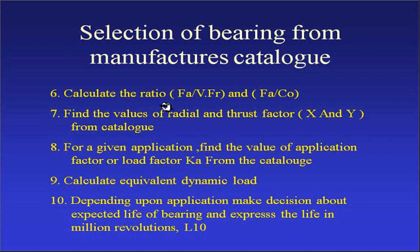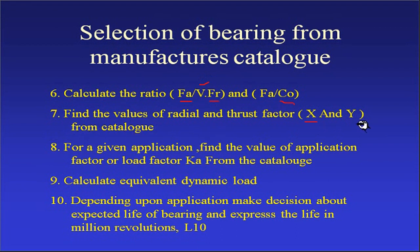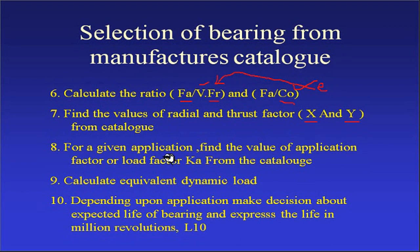Calculate the ratio of FA / (V · FR) and FA / C0. C0 is obtained from the catalog, and FA and FR are known from the problem statement. The rotation factor V is taken as 1 for inner ring rotation or outer ring rotation accordingly. Using the FA / C0 ratio, select the value of e, then compare FA / (V · FR) with e to determine the values of X and Y factors from the catalog.